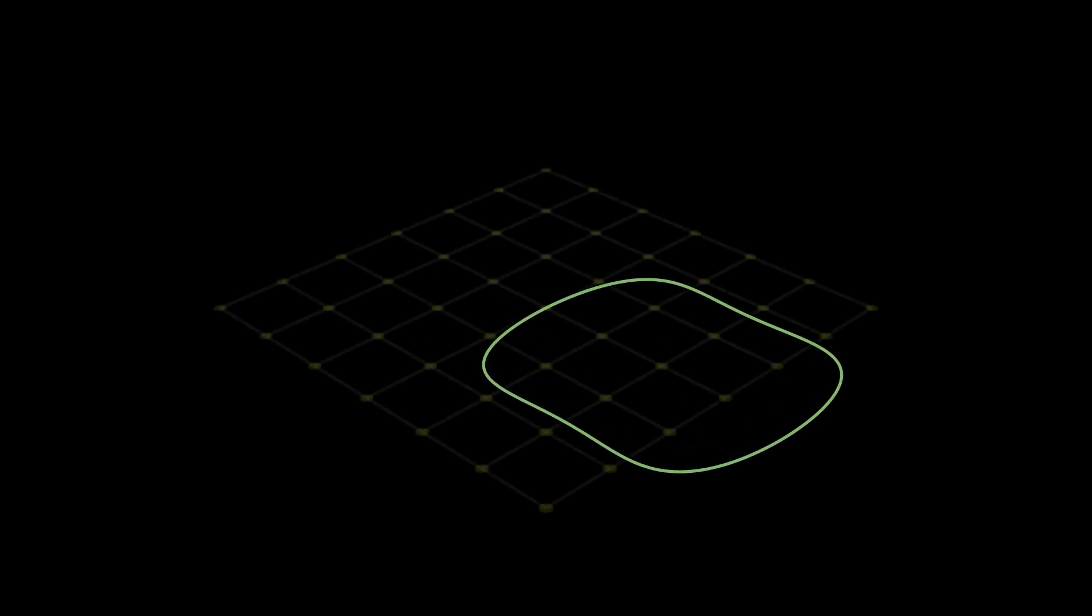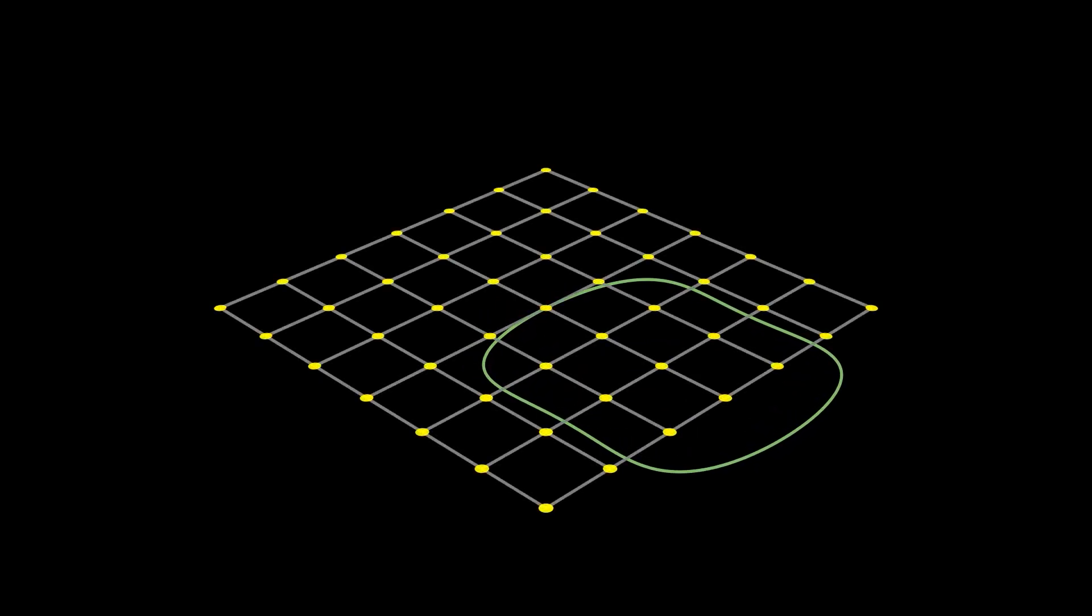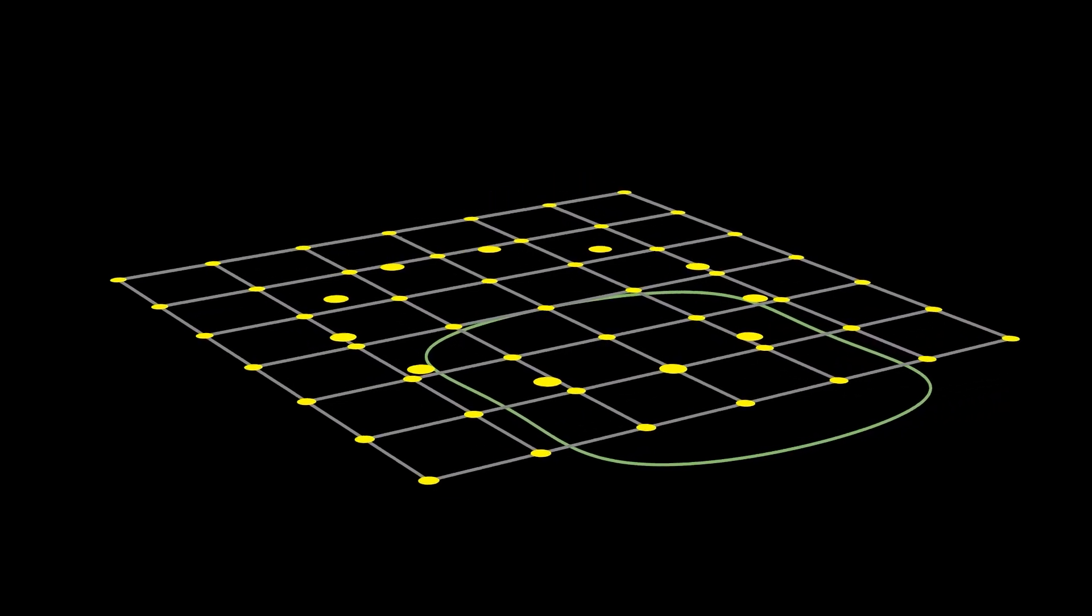But Wiles didn't stop there, nor did he stop at elliptic curves. He explored their deep connection to modular forms, mathematical structures that repeat in intricate, symmetrical patterns across the complex plane.